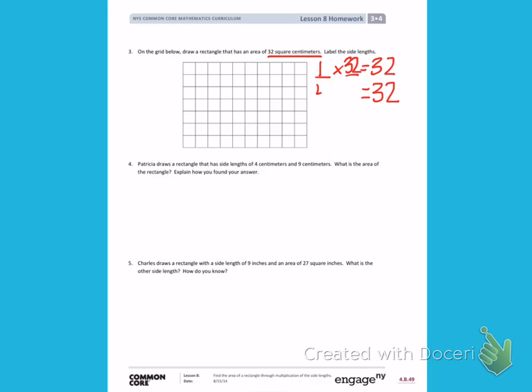I can think about 4s and I can skip count by 4s until I get to 32: 4, 8, 12, 16, 20, 24, 28, 32. That's 8 times. I can use these 2 factors to create my rectangle.